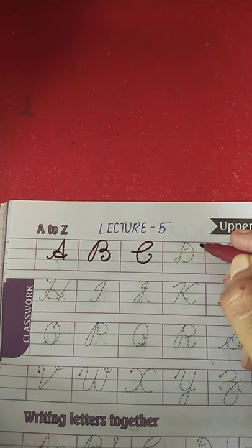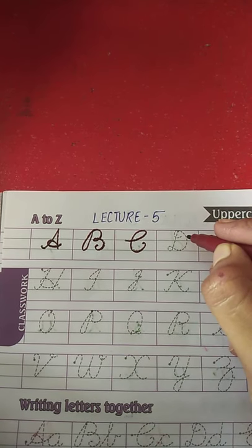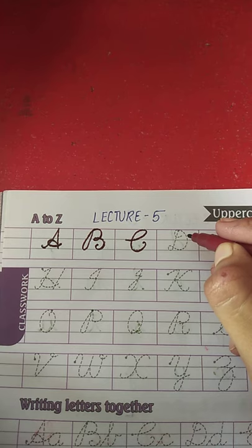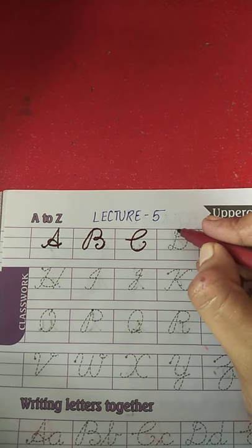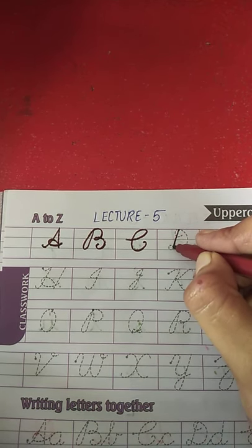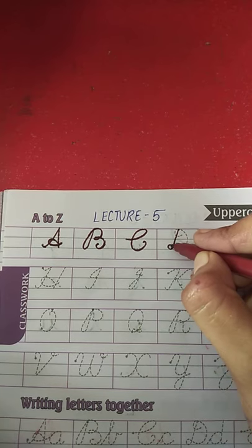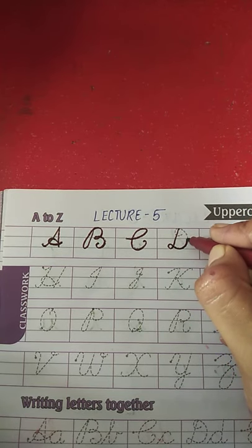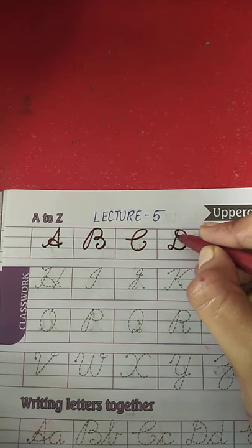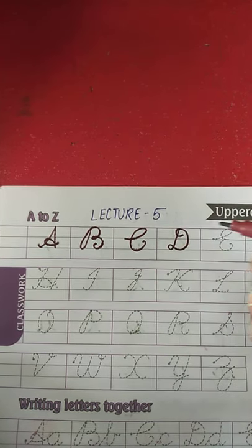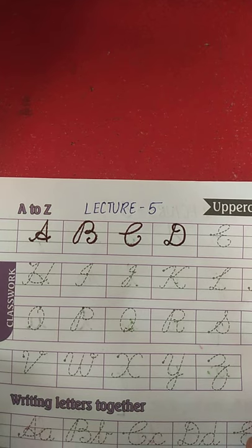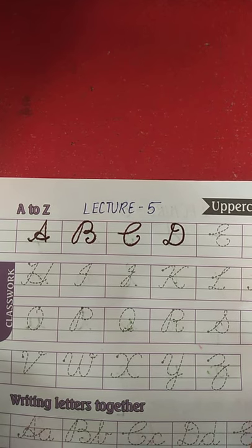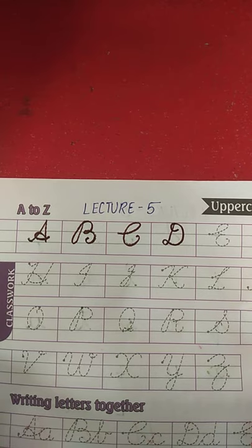C for cat ke baad kya aata hai? D for duck. Now put your pencil on the dot and draw a slanting line, a curve, and a semicircle and stop here. This is letter D — D for duck. What is the spelling of duck? D-U-C-K.